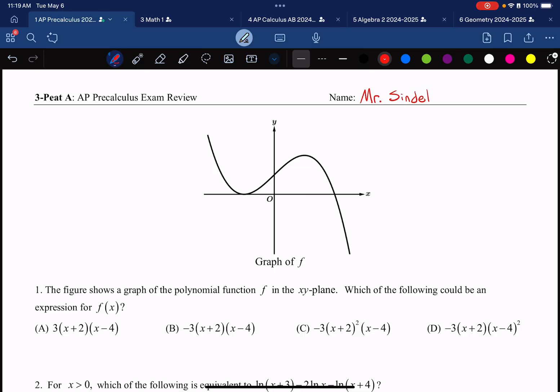Remember that on non-calculator questions, we should be averaging 1 minute and 57 seconds per question in order to hit all 28 questions in the 55 minutes on the AP test.